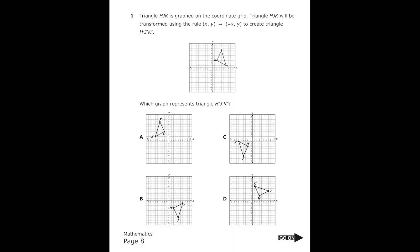Number one says triangle HJK is graphed on the coordinate grid. Triangle HJK will be transformed using the rule (x,y) transforms to (-x,y) to create triangle H'J'K' prime.